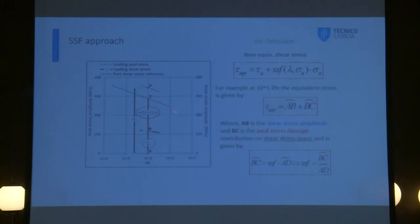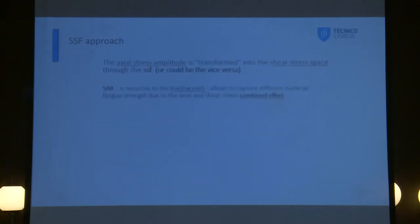BC is the contribution of the normal or the axial component of the loading. If you obtain this, we obtain the SES first, because this is the reference curve that appears from the uniaxial shear stress test. This is, in a brief way, our proposal. We take into account the amplitudes of the axial stress, the shear stress, and also, very important, the ratio. This ratio is very important. In another way, we can say that we are transforming the axial stress amplitude into the shear stress space, which is very important, but we can do the inverse version.